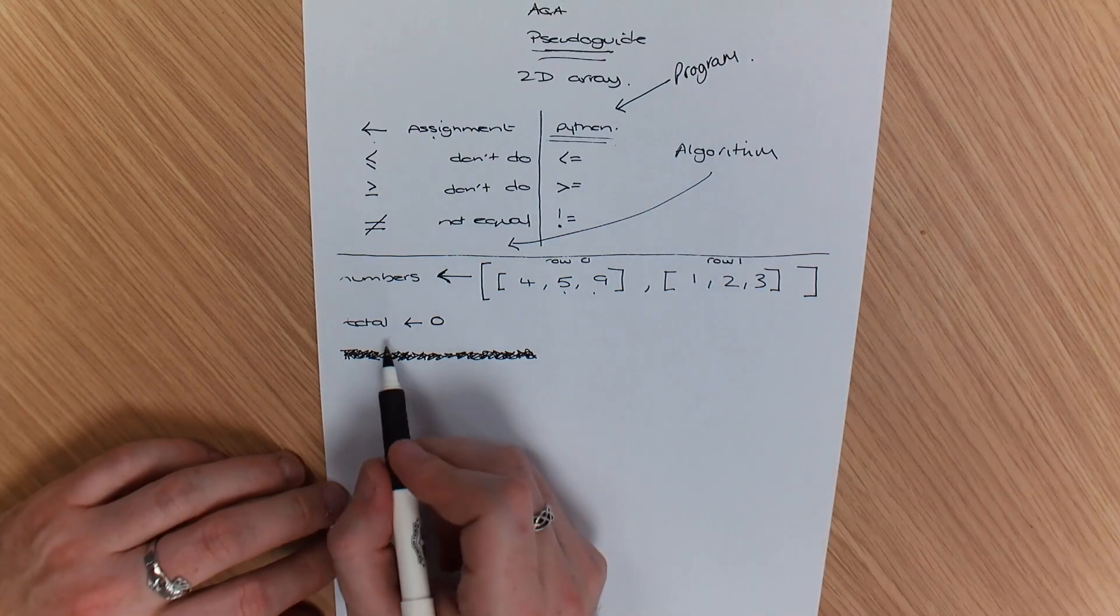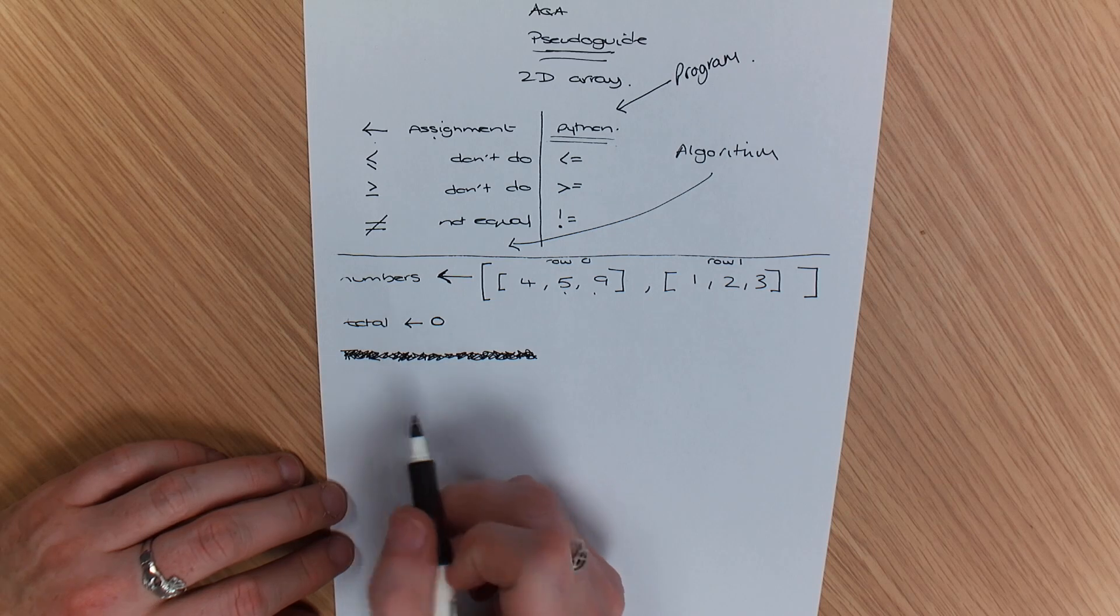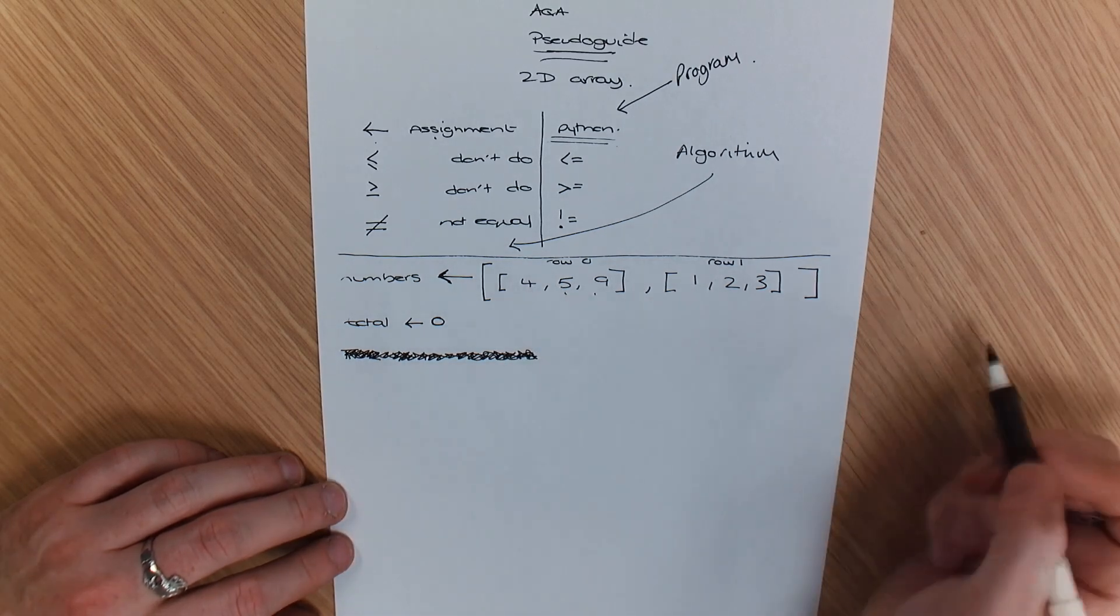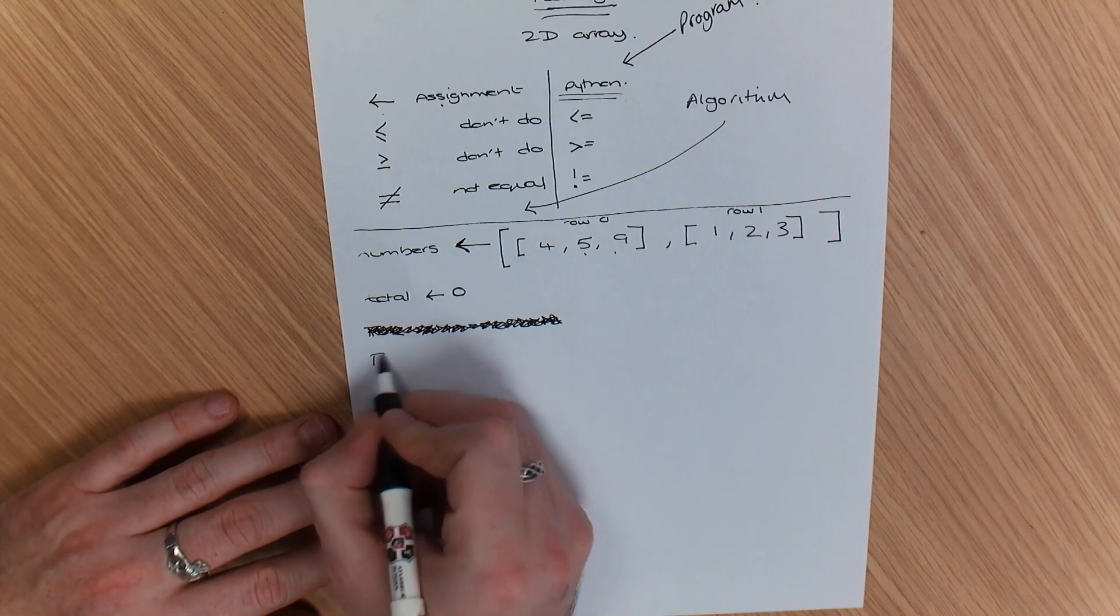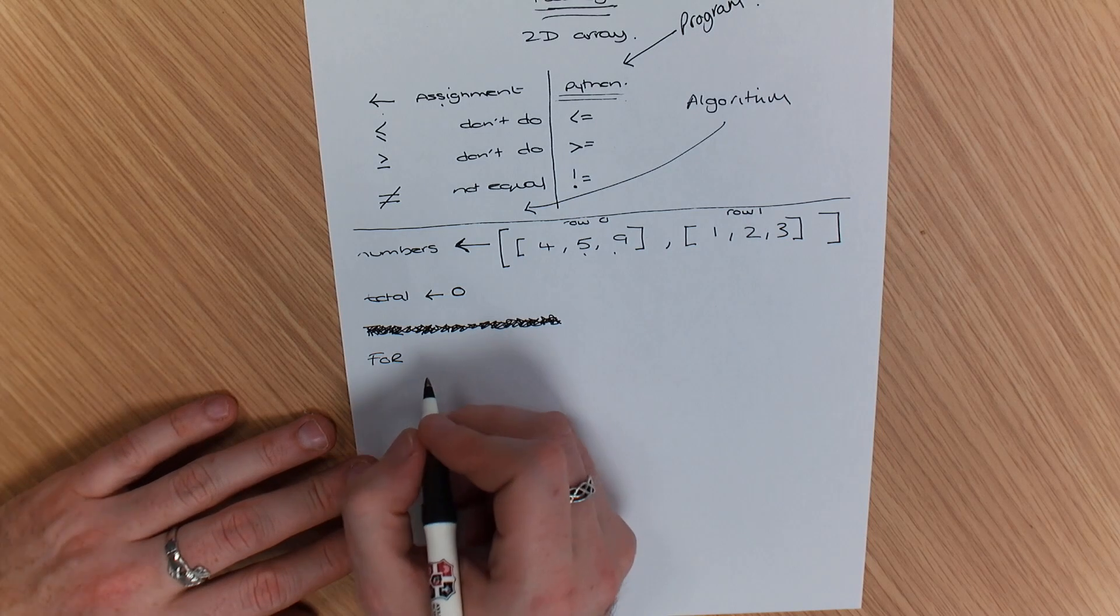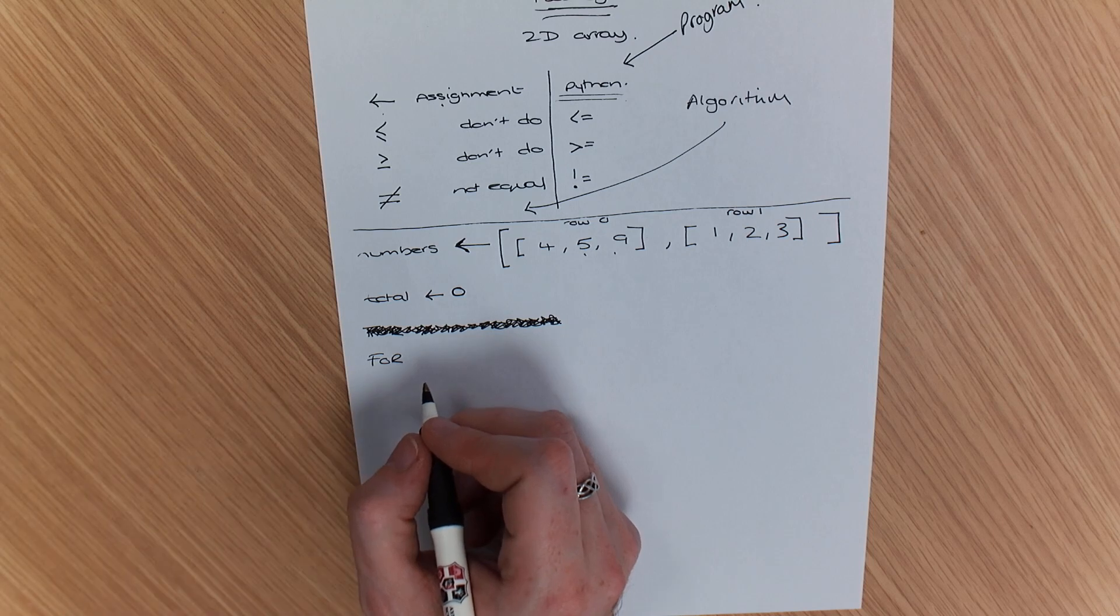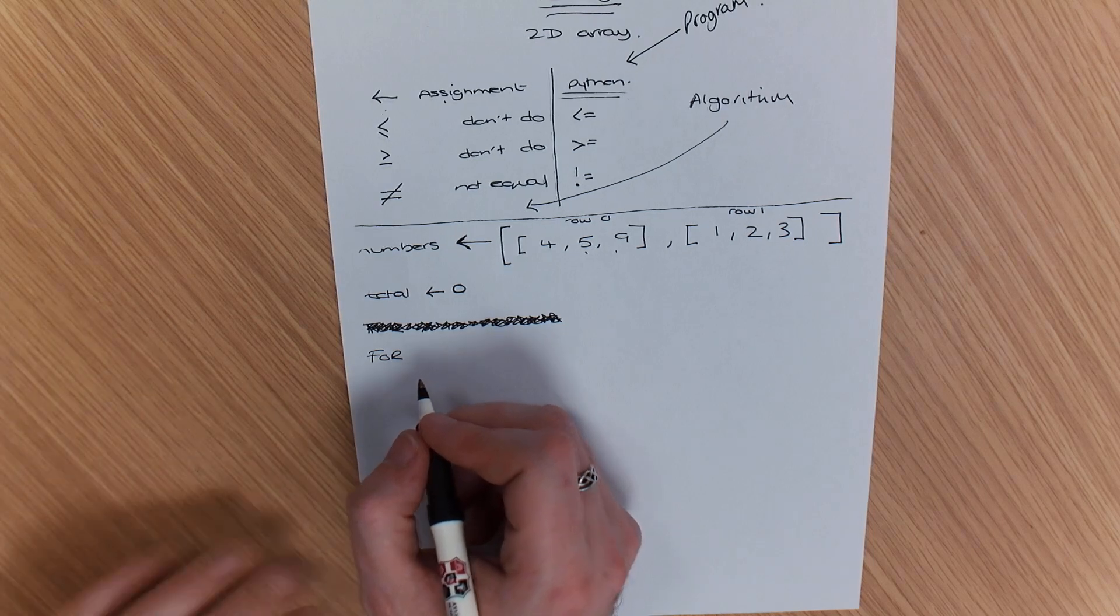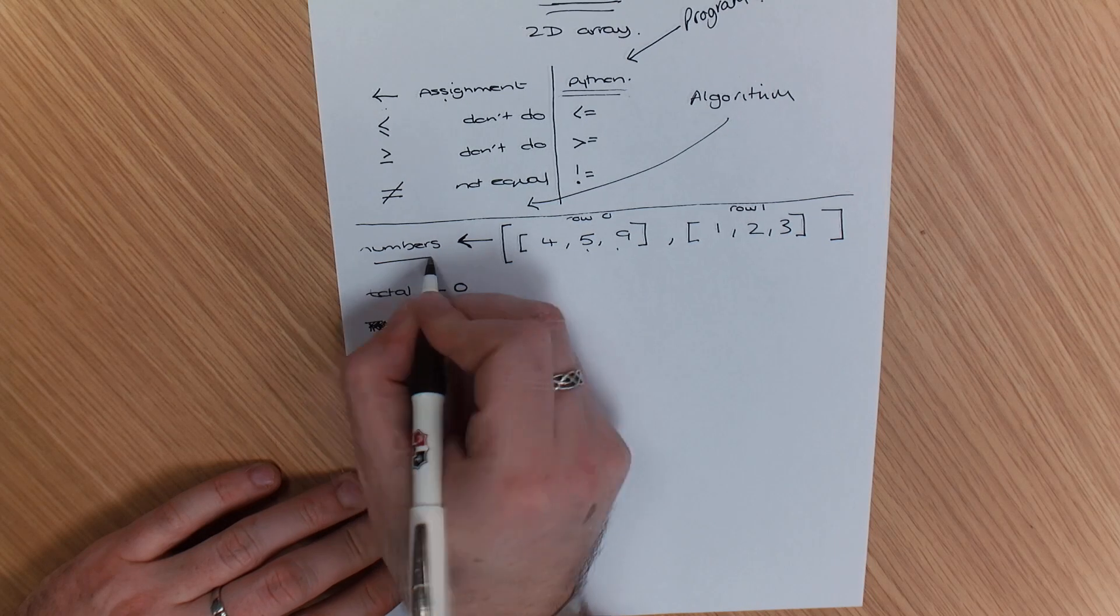I've allocated a total to 0 and I'll explain why in a minute because I'm going to show you how you can go through each item in your list. So what we're going to do is, when I'm doing 2D arrays, I tend to use the word row and column because they help me understand the coding. So we're going to say for row in numbers.